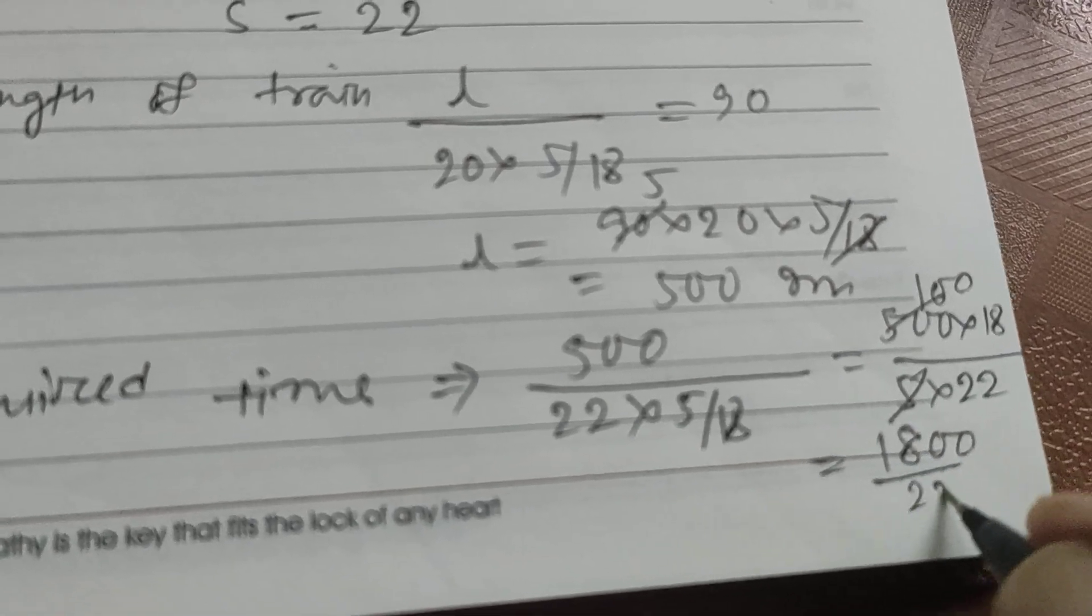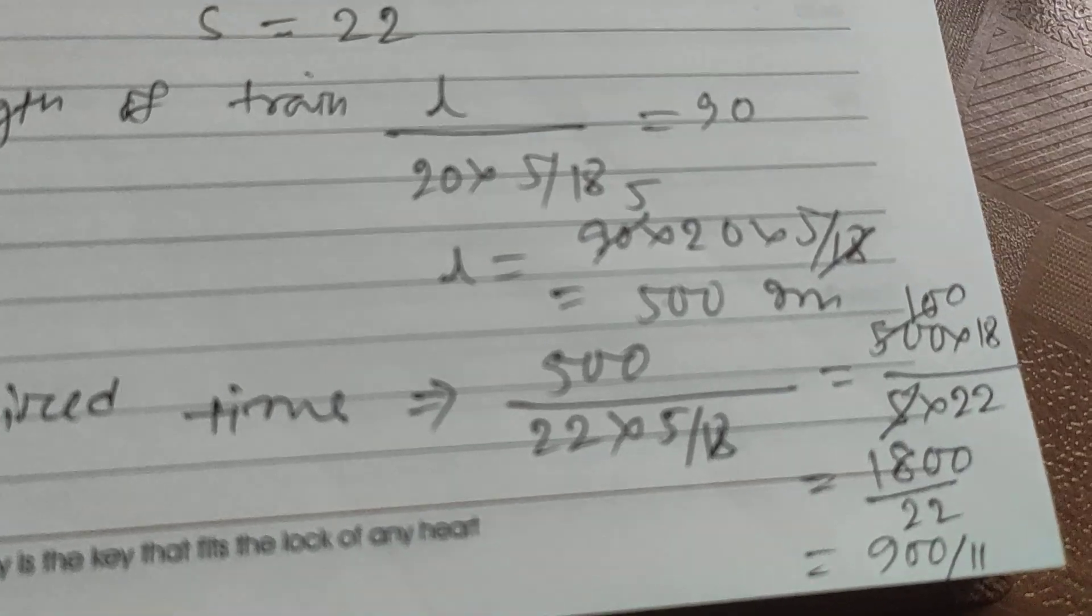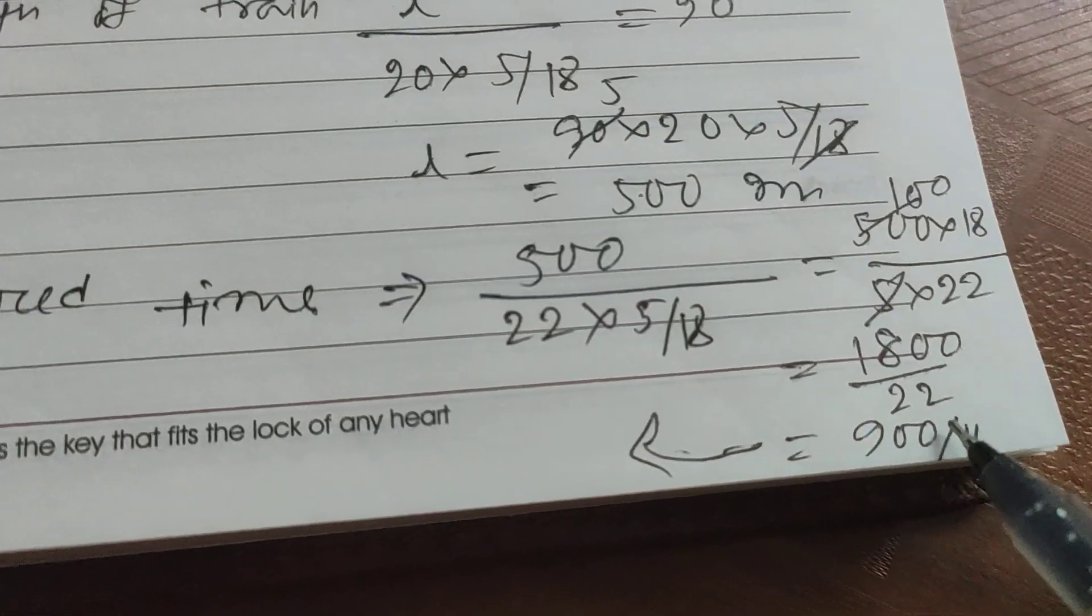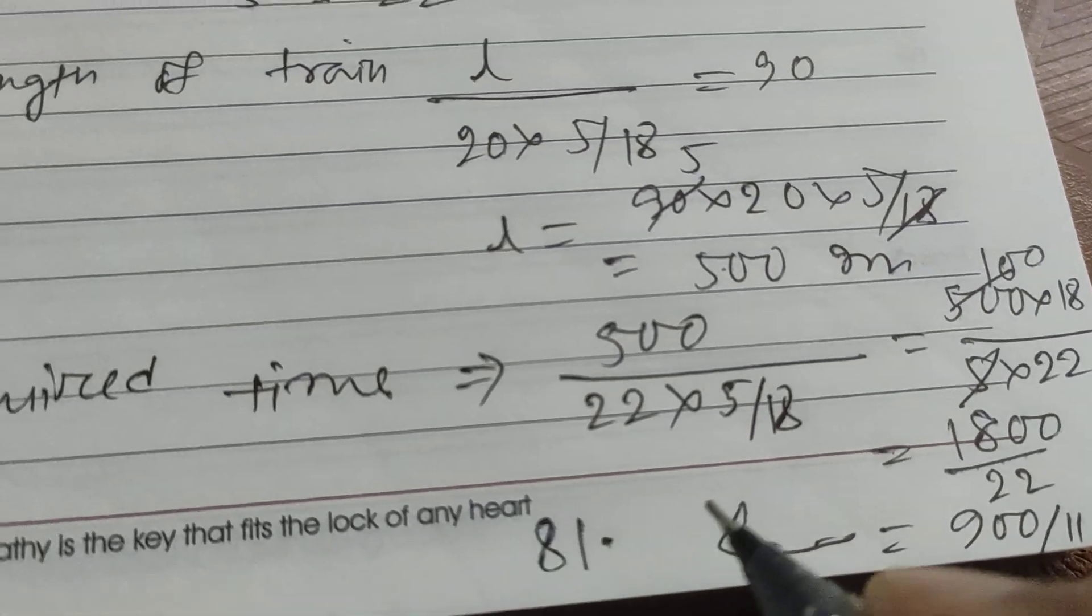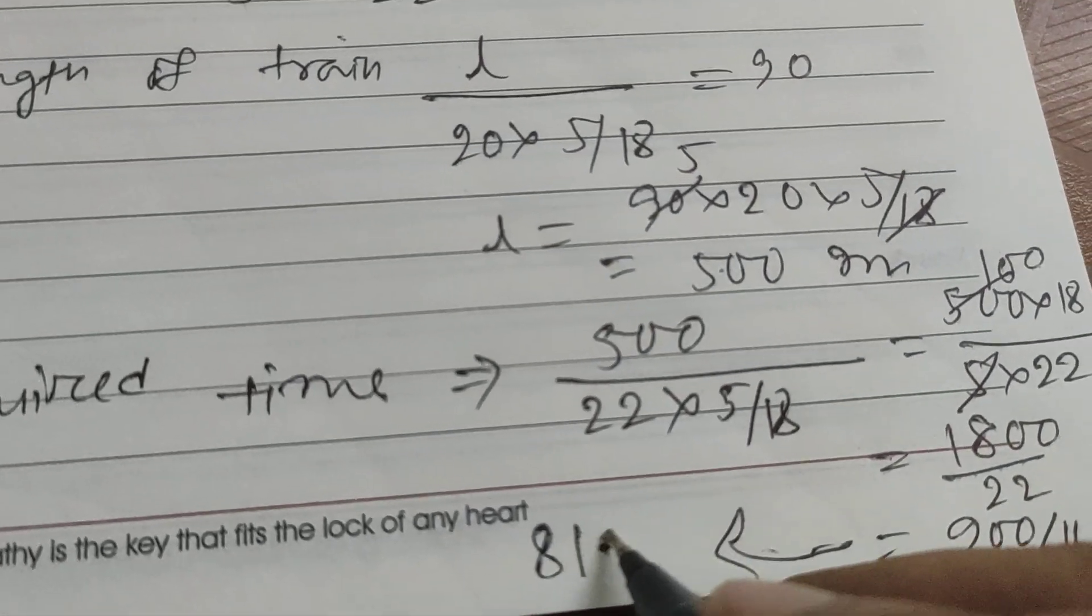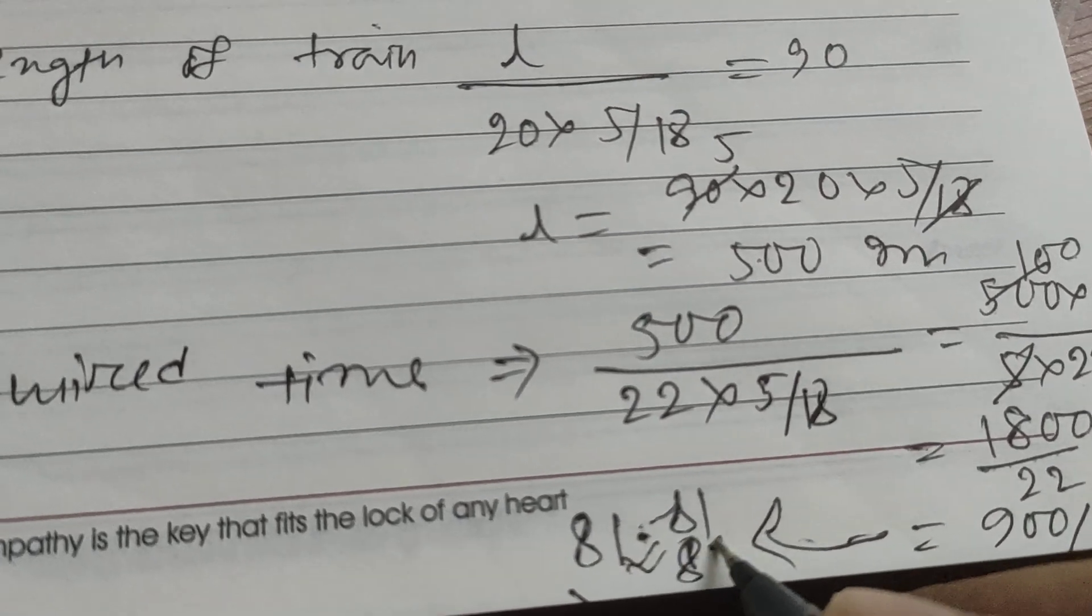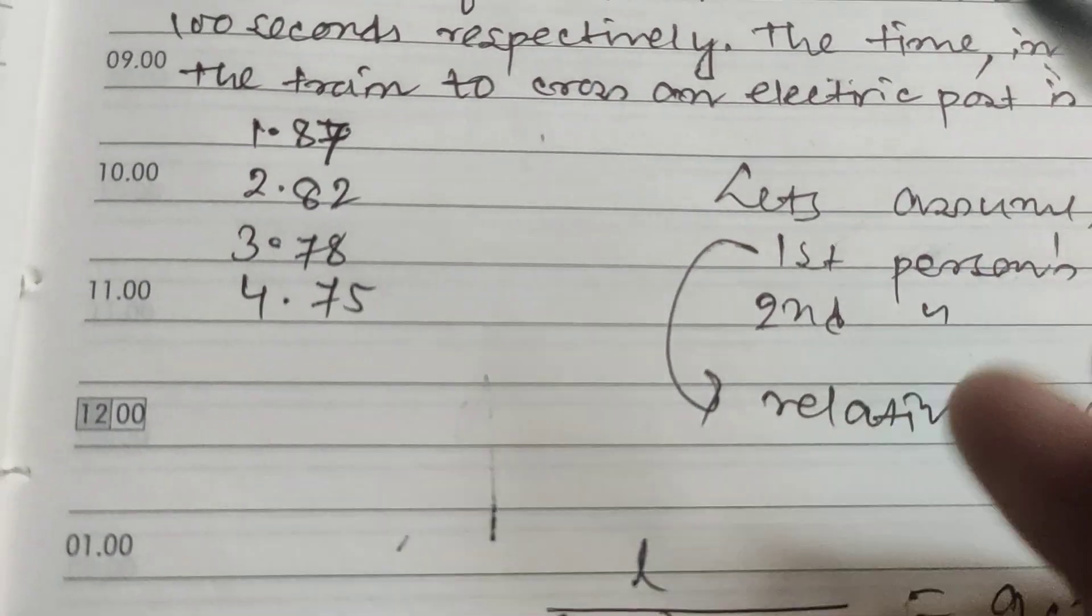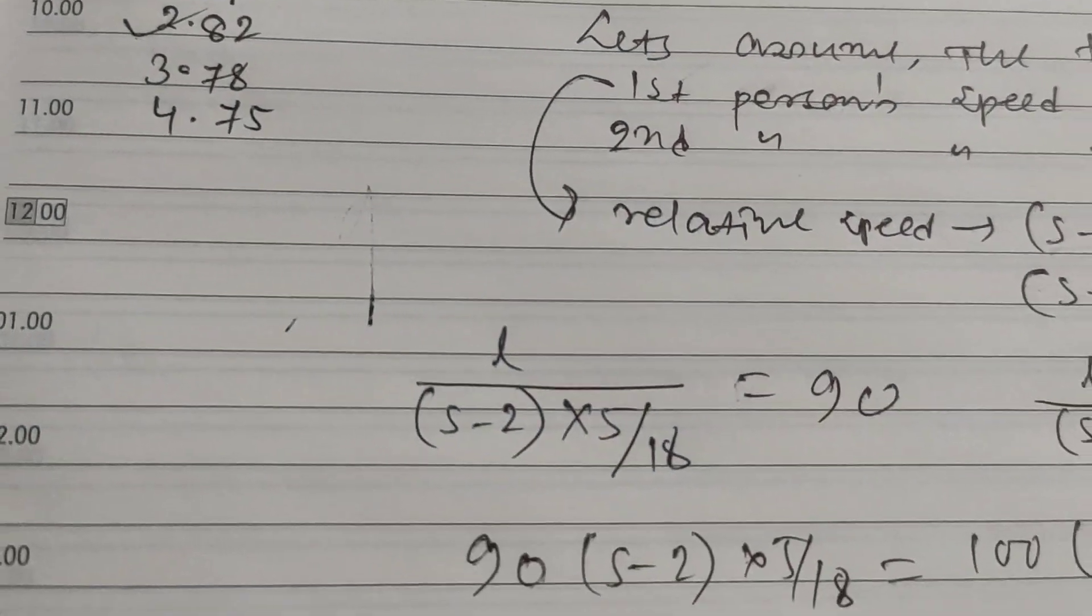This is 500 divided by 22 times 5 by 18, which equals 500 times 18 divided by 22 times 5, equals 9000 divided by 110, equals 900 divided by 11. This is approximately 81 point something, so approximately 82. Options are 87, 82, 78, 75, so 82 is the nearest answer. Thank you.